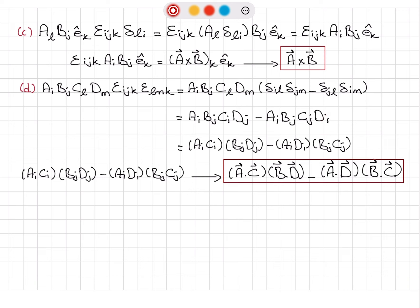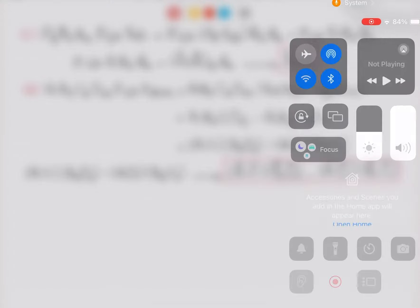Part D: A_i B_j C_l D_m ε_ijk ε_lmk — since k is in the same last position in both symbols, I use the Levi-Civita identity: δ_il δ_jm minus δ_jl δ_im. L's replaced by i and m's by j give A·C and B·D; l's replaced by j and m's by i give A·D and B·C. So the final answer is (A·C)(B·D) − (A·D)(B·C).